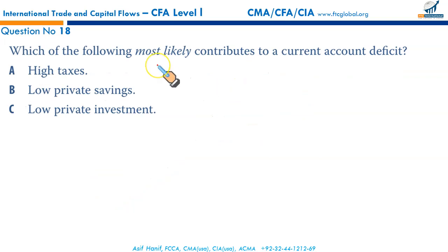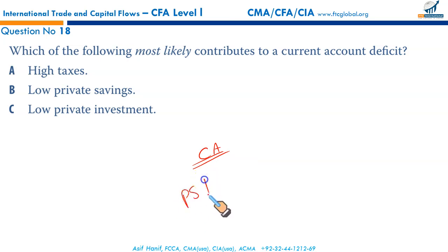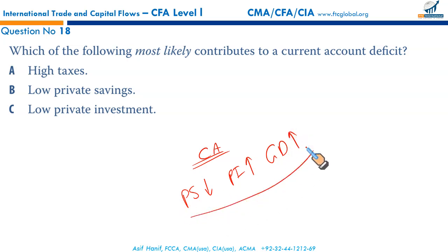Which of the following most likely contributes to a current account deficit? A current account deficit can arise from three things: low private savings, high private investment, and a government deficit, or any combination of these. So the answer here is low private savings — that makes B the correct option.